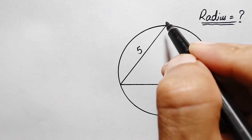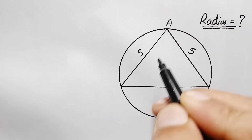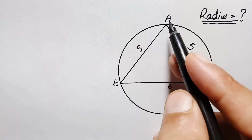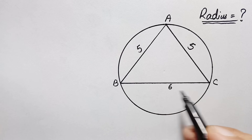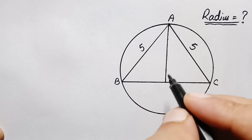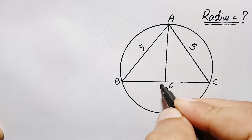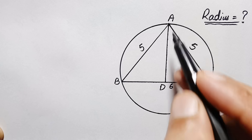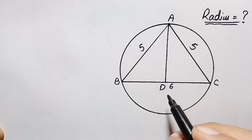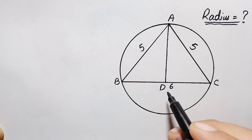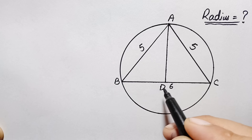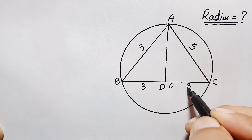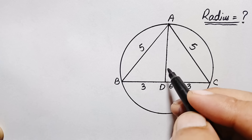First of all, let us suppose this is our triangle ABC. We will draw a perpendicular from point A to side BC. After drawing the perpendicular, let us suppose this is our point D. According to symmetry, this perpendicular AD will cut BC into two equal segments. The length of BC is six units, so the length of BD and DC will each be three units.